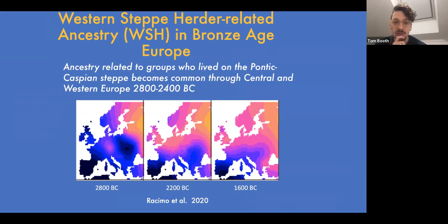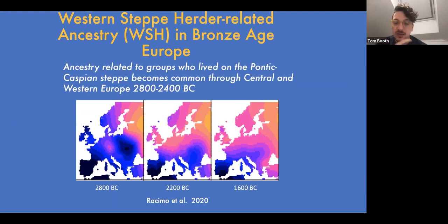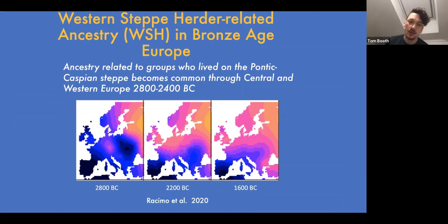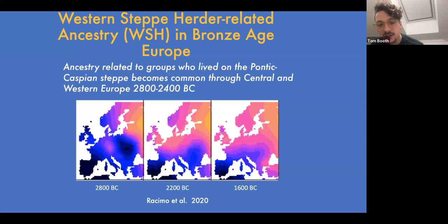Starting around 2800 BC, Western Steppe Herder ancestry expanded out of the Pontic-Caspian Steppe in eastern Europe and moved into the rest of Europe, with migrations carrying this ancestry spreading particularly through northern and central Europe, though also penetrating to a lesser extent into parts of southern and southeastern Europe.